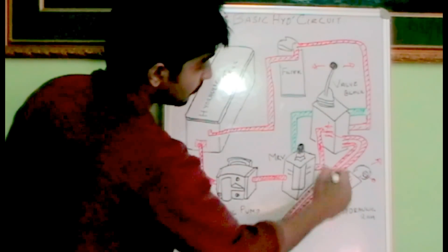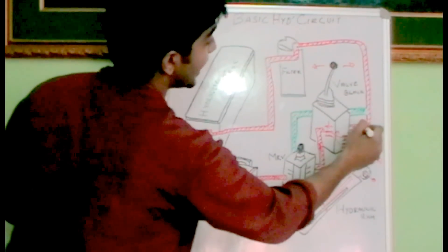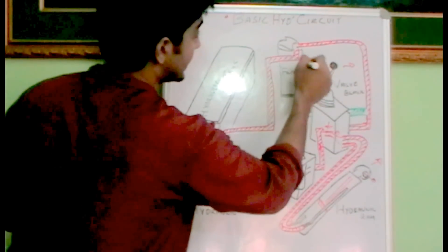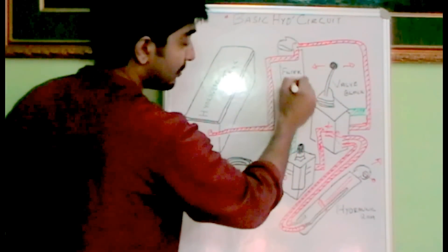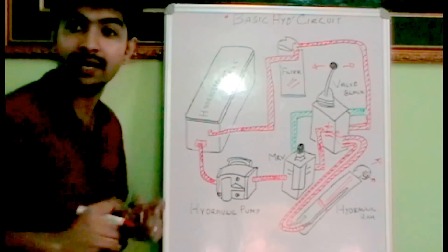The oil which is returning will move through the valve block, enter this line, and come towards the filter. The oil gets filtered by the filter and returns to the hydraulic tank. That's basically how it works.